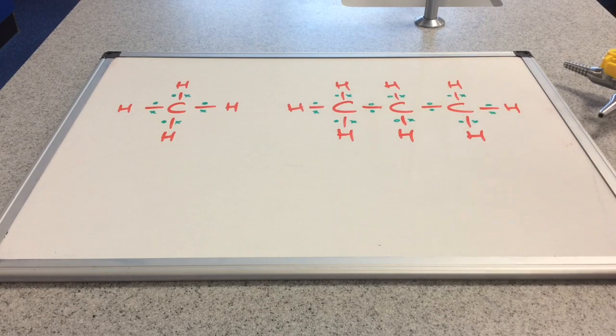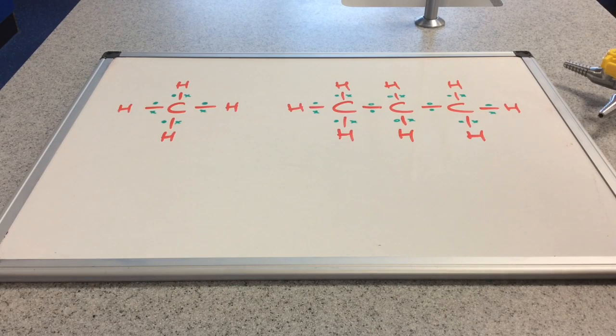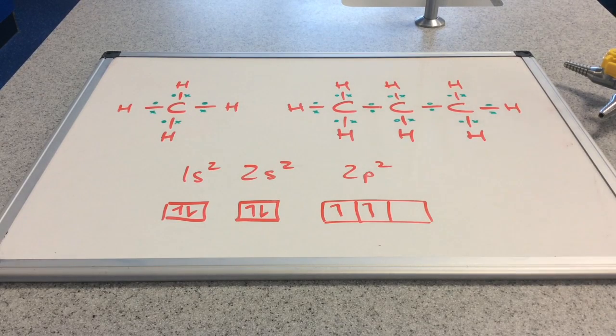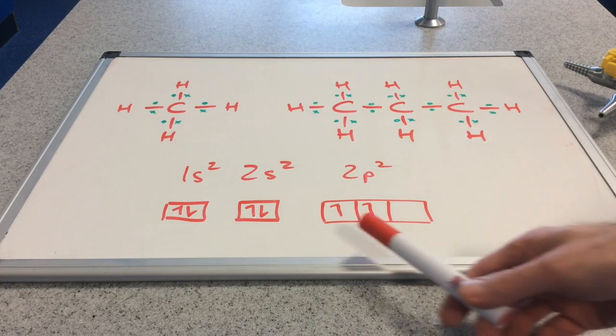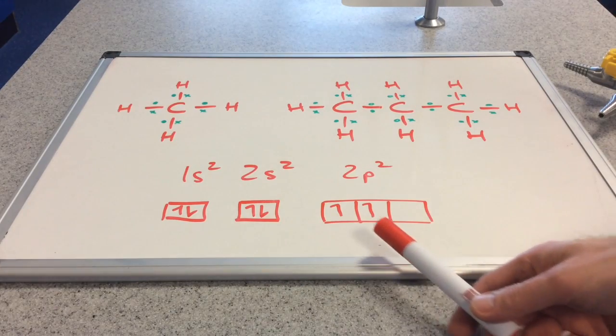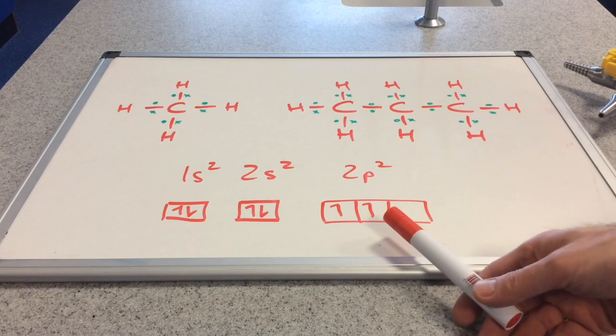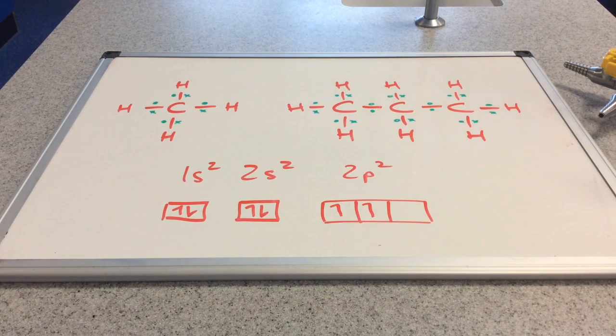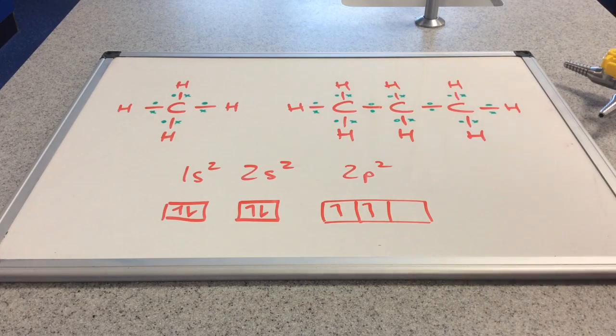So that explanation, carbon can form four covalent bonds because it's in group four, kind of makes sense. But then if we look at the electronic configuration for carbon in terms of sublevels, we've got a bit of a problem. And that's because this is carbon here, we've actually only got two unpaired electrons, so how on earth is it possible for four covalent bonds to form?